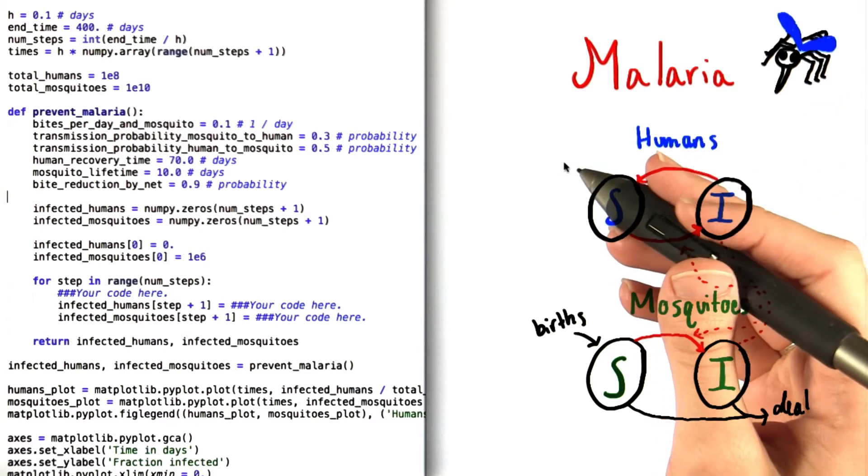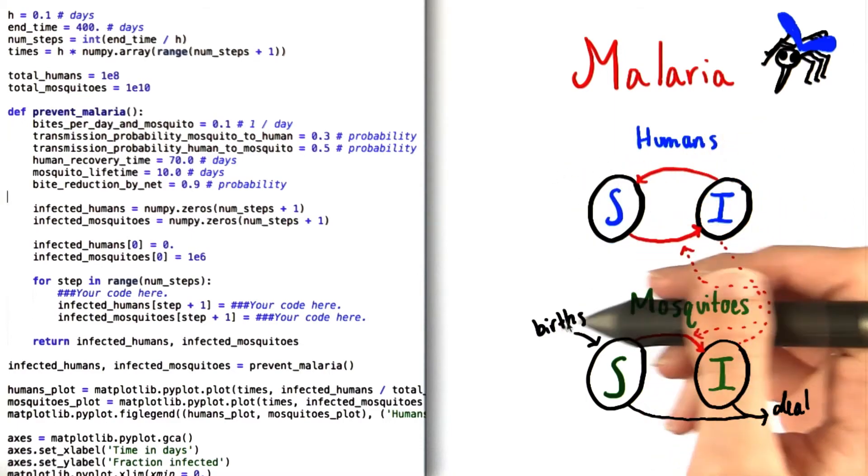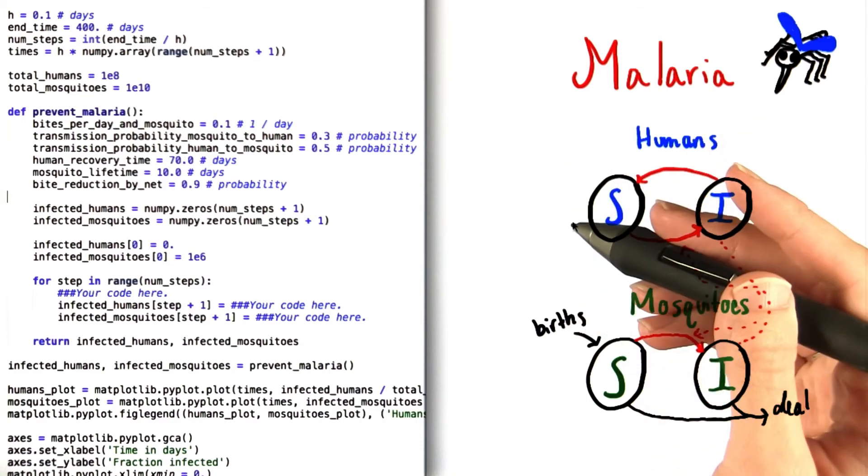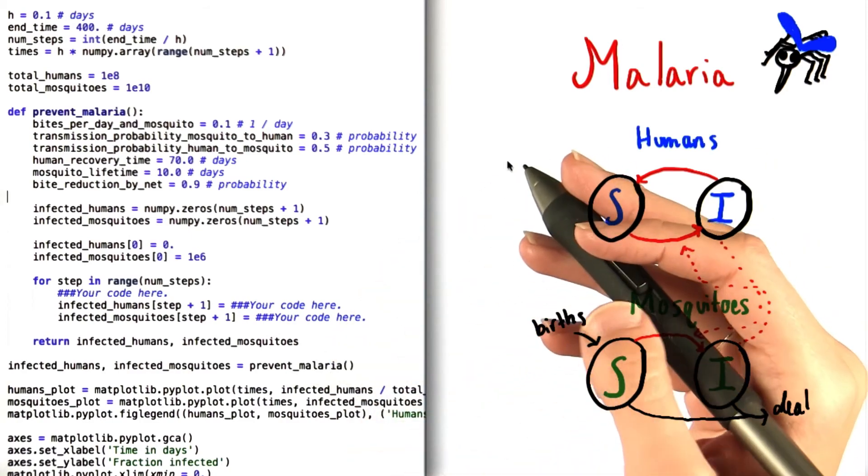A couple of other things to keep in mind about mosquitoes. For one thing, they can't get malaria until after they're born. Second, only female mosquitoes can transmit malaria. So just pretend that all the mosquitoes that we're talking about in this problem are female.